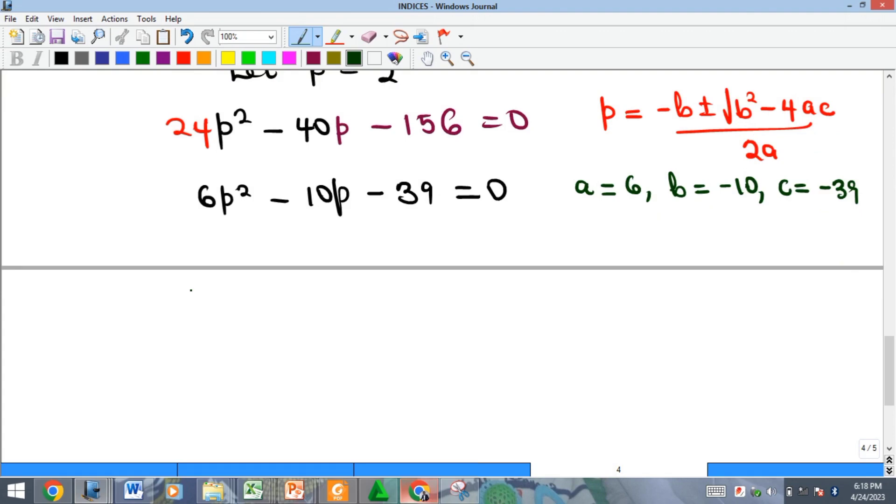We'll try to substitute into the formula. Our p is going to be negative negative 10, so we have plus 10 plus or minus the square root of b squared minus 4ac all over 2a.